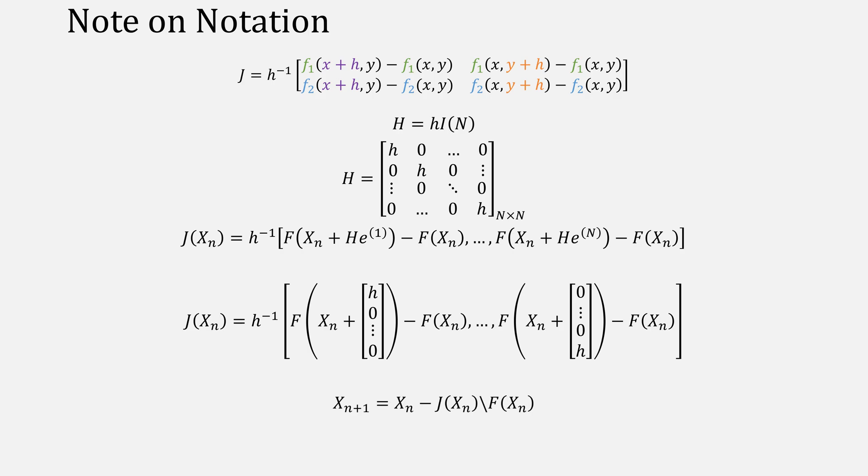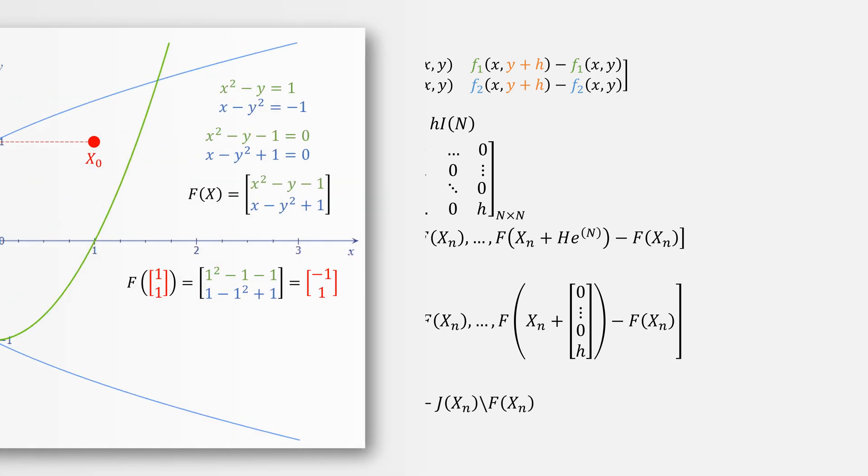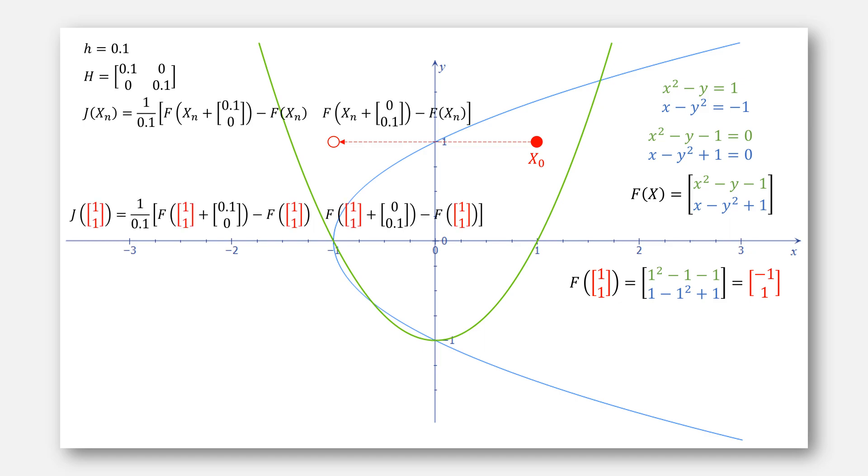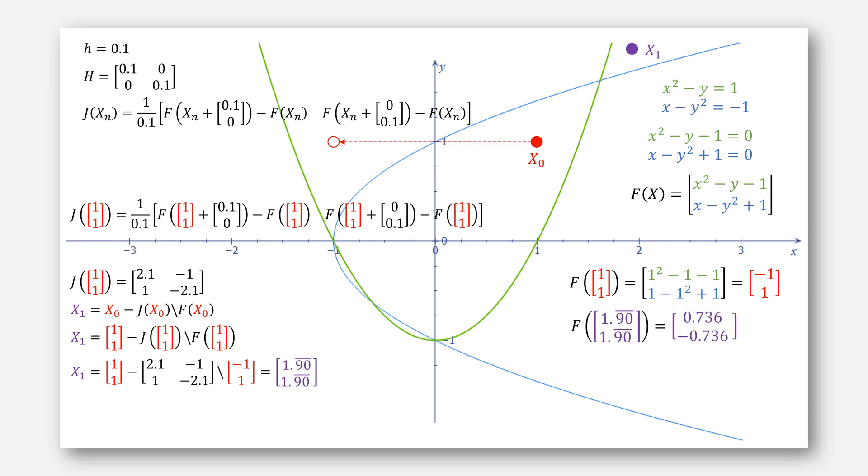Then we just apply Newton's method. Let's let little h be the value of 0.1, giving capital H to be this matrix. Plug that into our equation for the Jacobian, and we get this guy, which we've already seen. We'll then use this Jacobian approximation in our Newton's method as normal, giving our estimated value for x₁ to be 1.90 repeating, 1.90 repeating. Plot it right there, and evaluate it closer to 0.